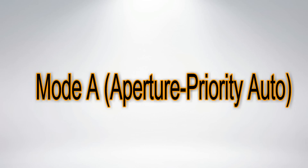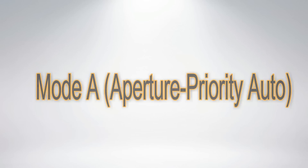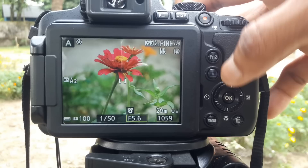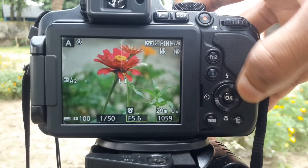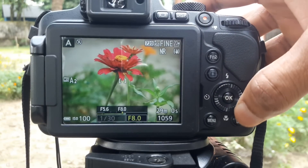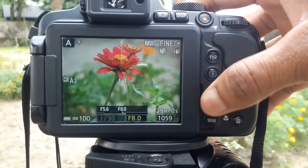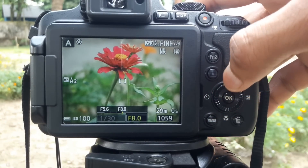Hi. Today I will describe what is aperture mode and why use it. The Nikon Coolpix camera has aperture priority mode, indicated by A or AV in your menu.